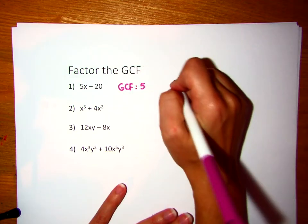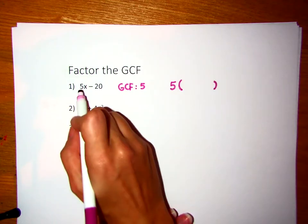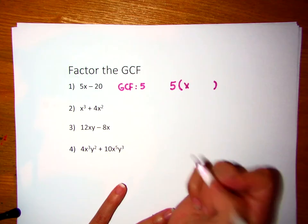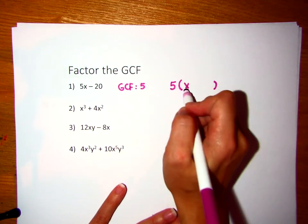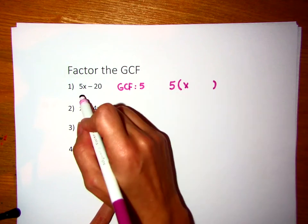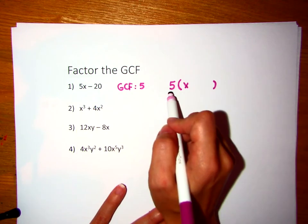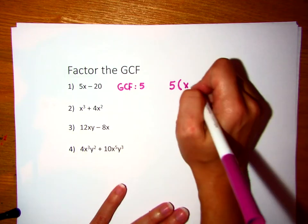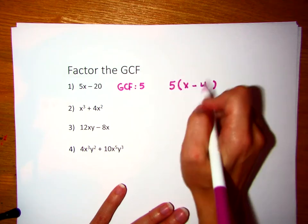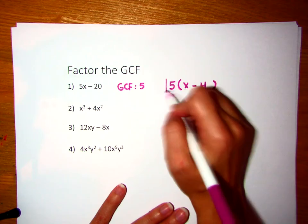We want to take that 5 out of 5x minus 20. What's 5x divided by 5? Just x. Or another way to say this is 5 times what gives me 5x? 5 times x gives me 5x. 5 times what gives me negative 20? 5 times negative 4. If we distributed this back out, we would get 5x minus 20. This would be our final answer.